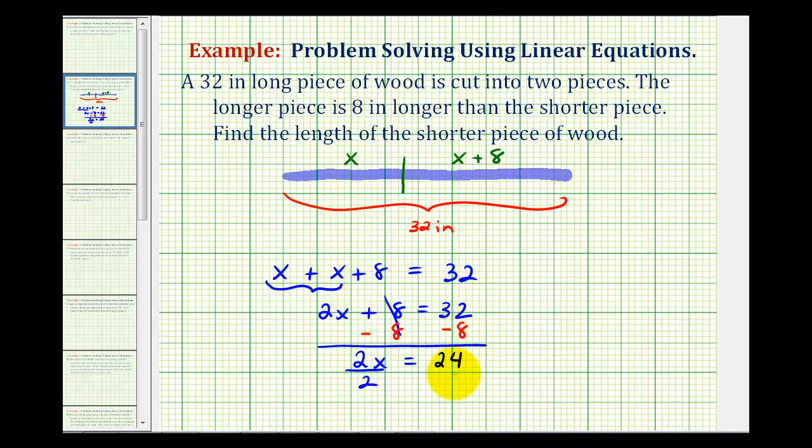Divide both sides by two. We have x equals twelve. So if x equals twelve, the length of this piece would be twelve inches. And x plus eight would be twenty inches.